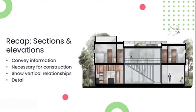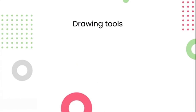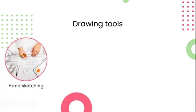Now we know what elevations and sections are, let's look at some of the tools we can use to draw up these communication drawings. Here's a list of software that I use. Firstly, we hand sketch — this is an amazing tool that comes into play in probably all phases of your project design timeline. Clients really like to see hand sketches, and hand sketching improves our critical eye.